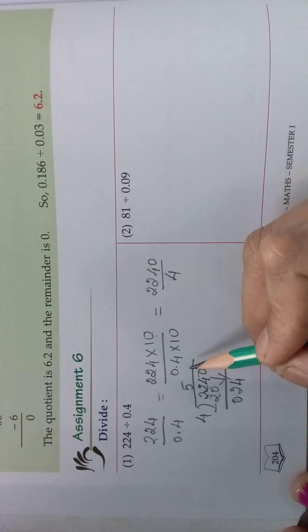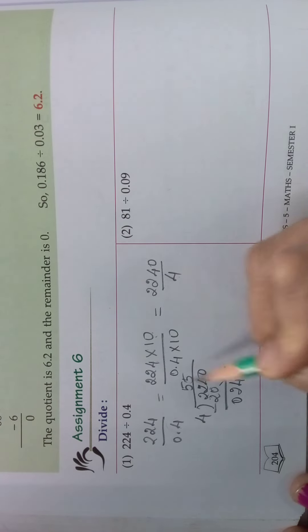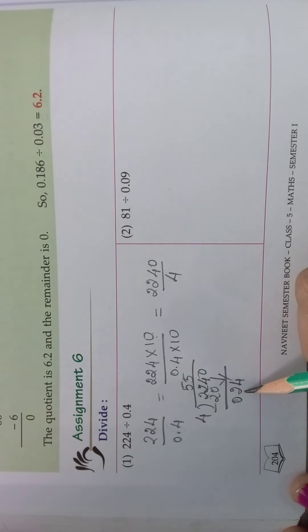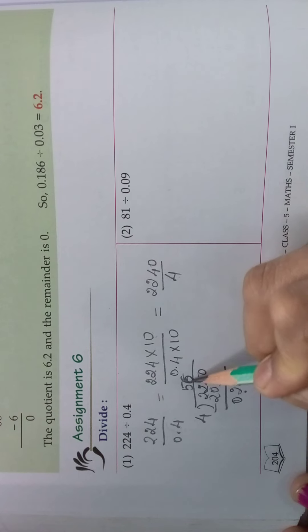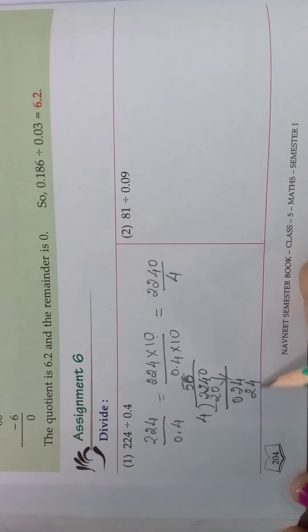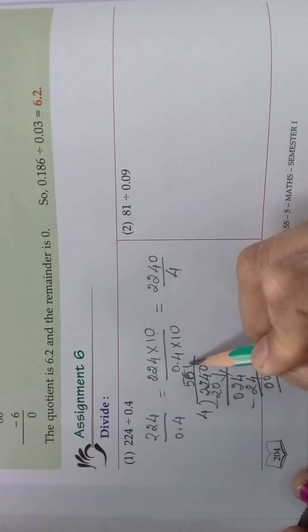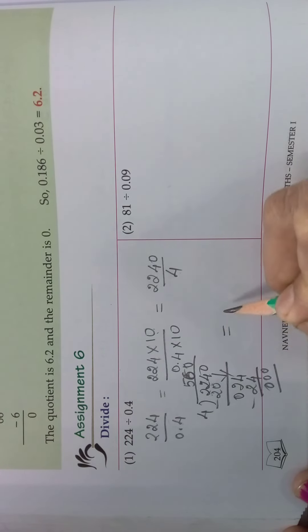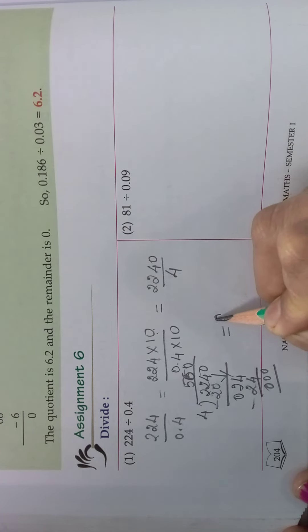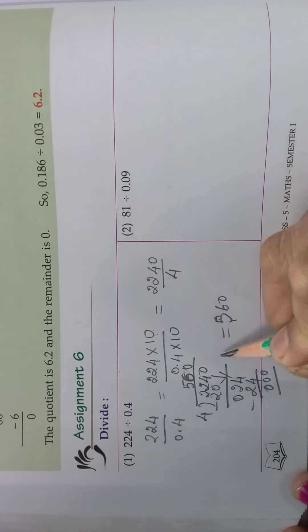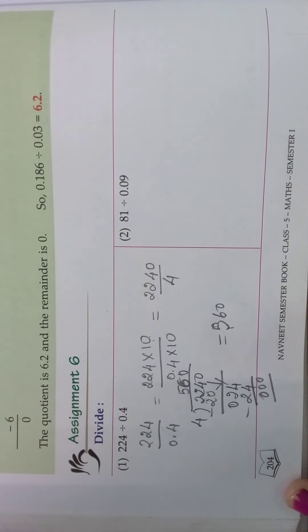So take what will happen. Again 5 fours are 20. 6 fours are 24. 6 fours are 24. Now 0, it will become 0. And this also 0. So 0 puts 0 here. So what is the quotient? See 560 is the quotient. Understood children. In this way you do the sum.